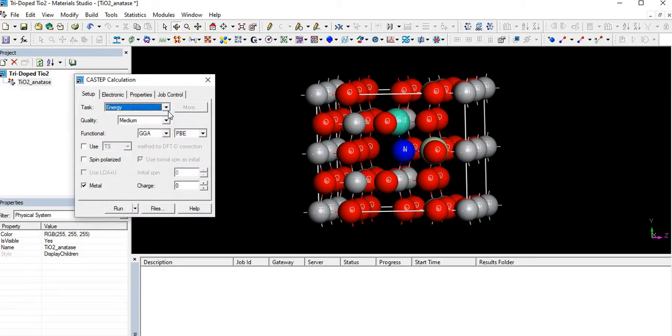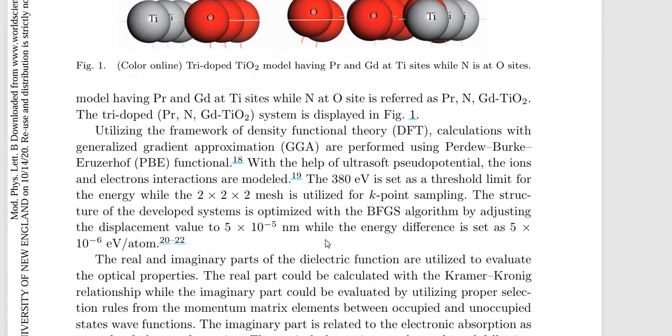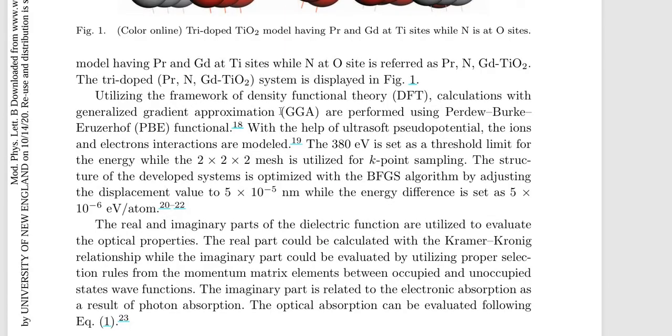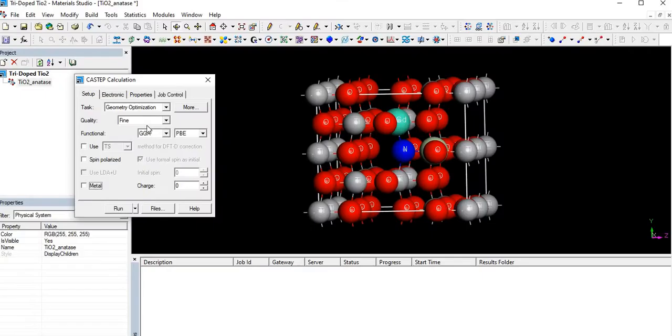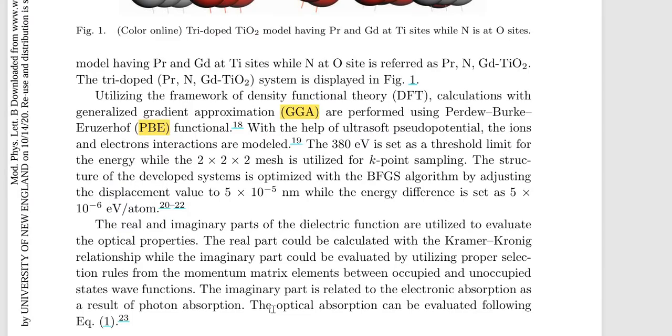From the task section, we select geometry optimization with fine quality. As titanium oxide is not metal, we must uncheck this. For this, we use GGA with PBE functional, so let's select GGA-PBE. And with the help of ultrasoft pseudopotentials, we must select ultrasoft.